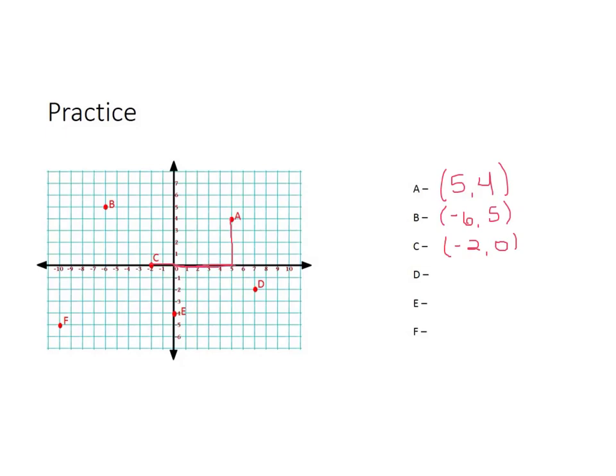D, go over 7, down negative 2. So it would be (7, -2), and that puts us in quadrant 4. E, well, we didn't go left or right. We stayed right on the x-axis. We didn't go anywhere, but we do go down 4. So the x would be 0, the y is negative 4.